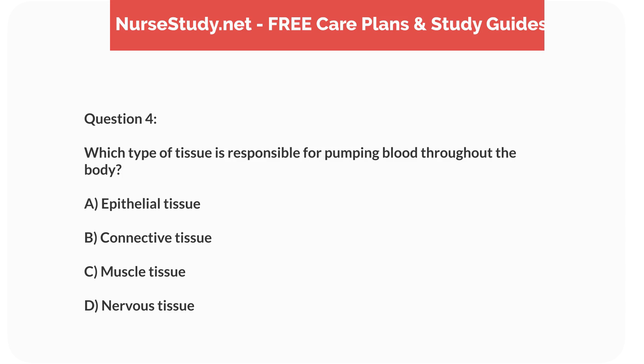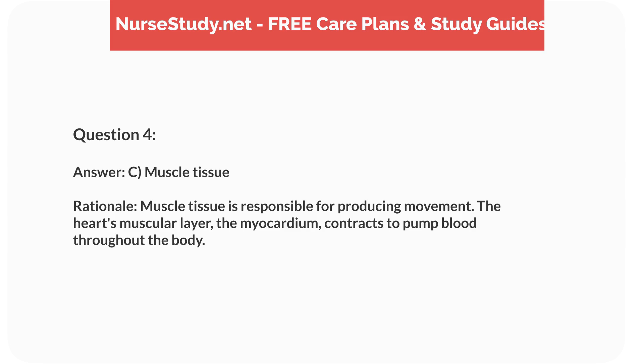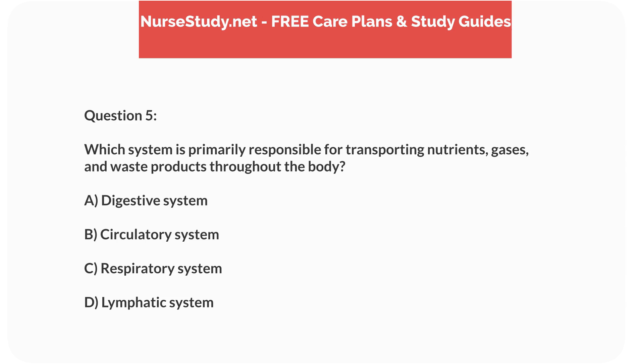Question 4: Which type of tissue is responsible for pumping blood throughout the body? A) epithelial tissue, B) connective tissue, C) muscle tissue, D) nervous tissue. Answer: C, muscle tissue. Rationale: Muscle tissue is responsible for producing movement. The heart's muscular layer, the myocardium, contracts to pump blood throughout the body.